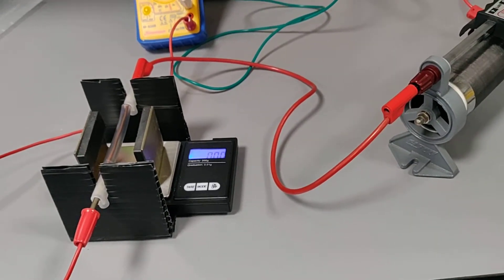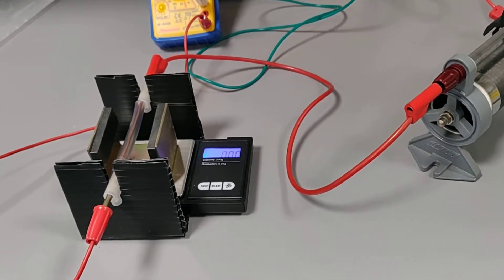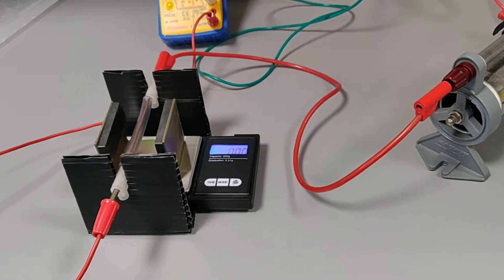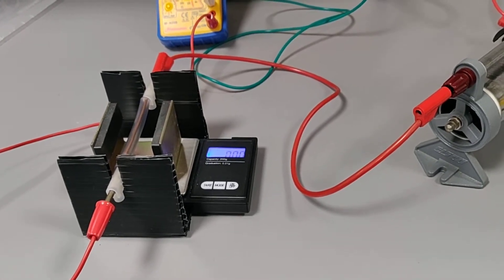So here we have the experimental setup for investigating the force on a wire in a magnetic field due to the current flowing through the wire.